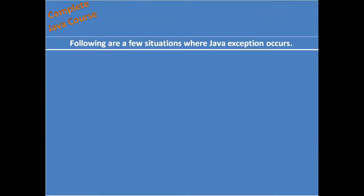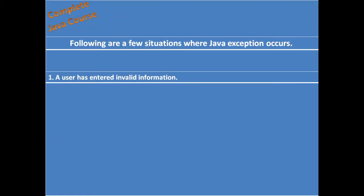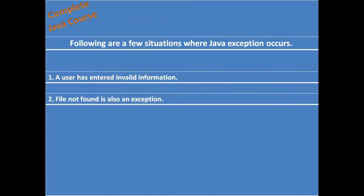Following are a few situations where Java exception occurs. Number 1: A user has entered invalid information. The first reason for an exception occurring is the user entering invalid information. If the user enters invalid information, then there is a chance for an exception occurring.